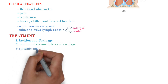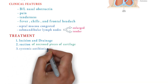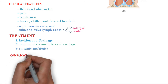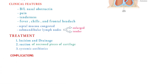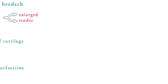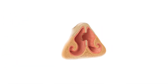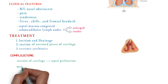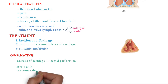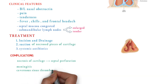The complications of septal abscess include necrosis of cartilage, which can lead to septal perforation. There can also be spread of infection to the cranial cavities, causing meningitis or cavernous sinus thrombosis. These are rare but serious complications.